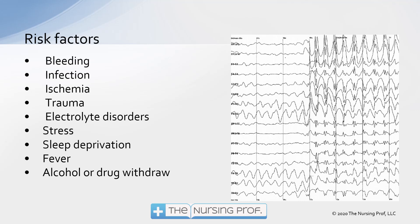If you take a look at the EEG on the right, it illustrates on the left-hand side some normal brain activity, and then on the right-hand side you can see a seizure occurring — very similar to what you might expect with EKG abnormalities, where nice complexes go into big erratic-type complexes. It's the same process of out-of-control electrical impulses, but in this case it's the brain instead of the heart.